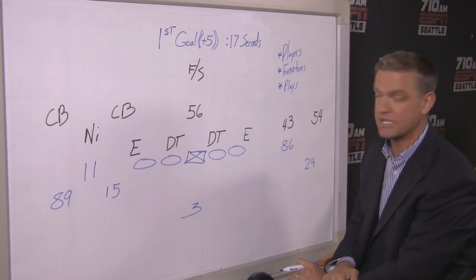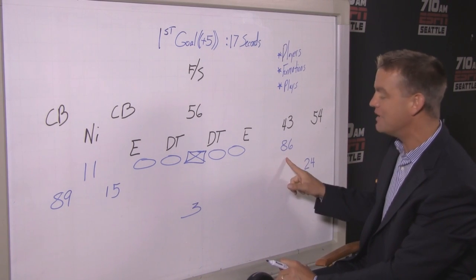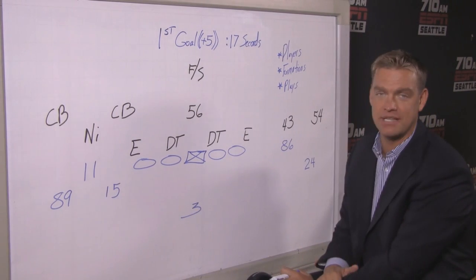Secondly, formations. Once again, you're in 11 personnel, a very popular personnel group with the Seahawks. One back, one tight end. They happen to be lined up next to each other in empty, and you're three wide receivers on the other side.